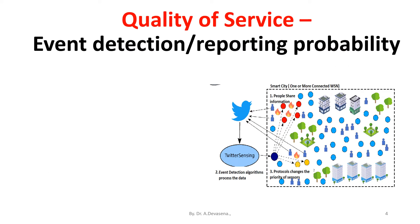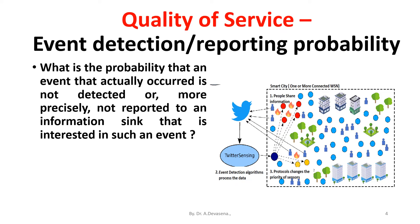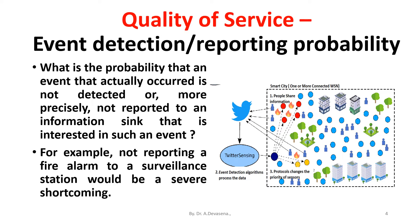What is the probability that an event that actually occurred is not detected, or more precisely not reported to an information sink that is interested in such an event? For example, not reporting a fire alarm to a surveillance situation would be a severe shortcoming. Thus, this probability can be traded against the overhead spent in setting up structures in the network that support the reporting of such an event.